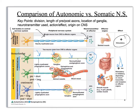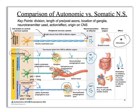Parasympathetic has a very long presynaptic neuron. It also releases acetylcholine at the first junction, and then it has a shorter postsynaptic neuron where it releases acetylcholine. The sympathetic originates in the thoracolumbar region of your spinal cord, whereas parasympathetic originates in the craniosacral. Key highlights: presynaptic versus postsynaptic length, what neurotransmitter they secrete at each spot, and the origin in the thoracolumbar spinal cord versus cranial or sacral section.